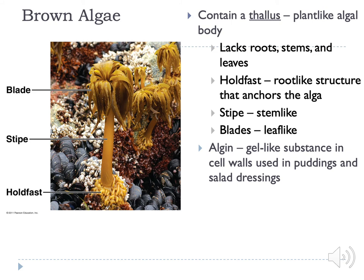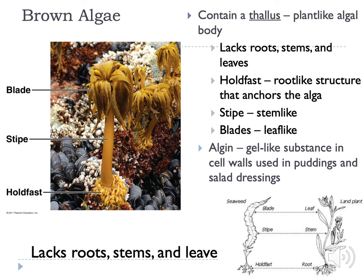Here we see the structure of a typical brown alga. You have the blades, which function like leaves; a stipe, which functions like a stem; and a holdfast, which is simply for holding and anchoring. While these structures function like those in land plants, they are not morphologically different from each other — their cell types are all the same. Unlike a land plant which uses roots to absorb, all the cells in brown algae can absorb.